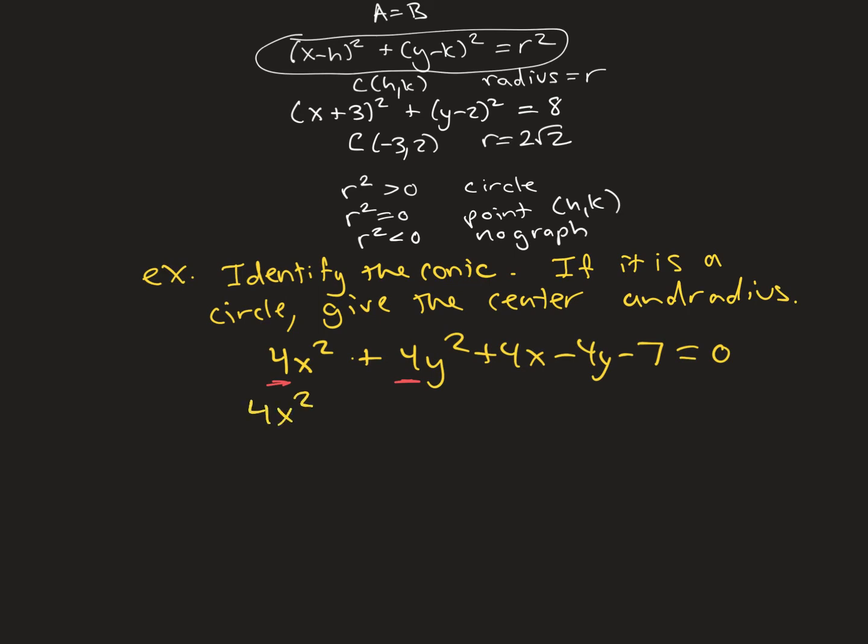To complete the square, we're going to get everything with x's together, and everything with y's together, and bring the constant to the other side. You cannot complete the square until the coefficient of the squared term is 1, so I'm going to factor out the 4, and I'm going to factor out the 4 with the y's as well.